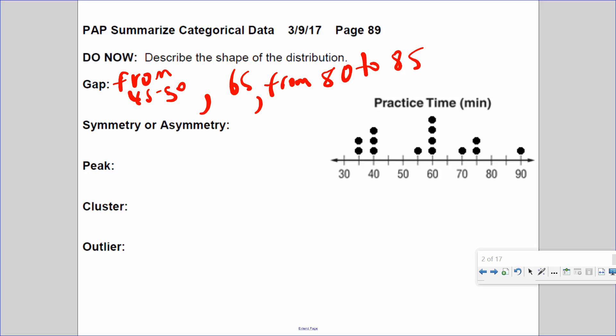There's a gap at 65, and there's a gap from 80 to 85. Is it symmetrical or asymmetrical? It is asymmetrical. The left side does not look like the right side, not even close.